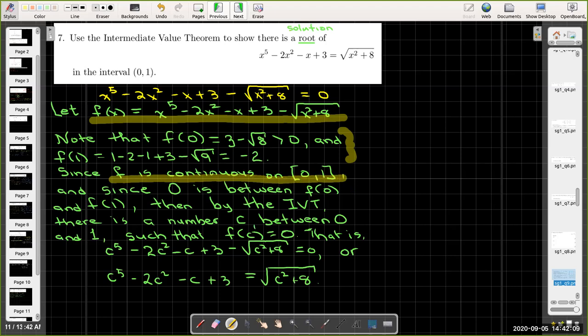on the closed interval. And we need to state that 0 is an intermediate value, that is 0 is between f(0) and f(1).